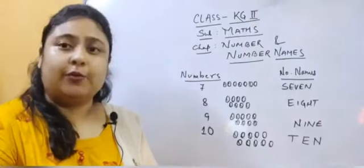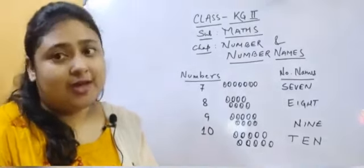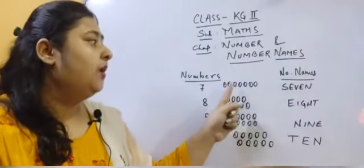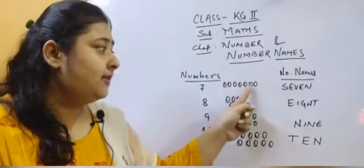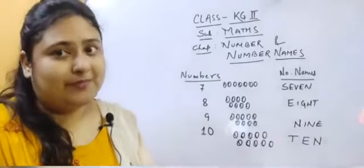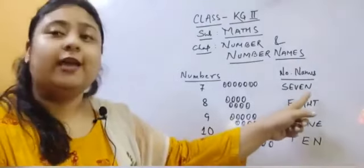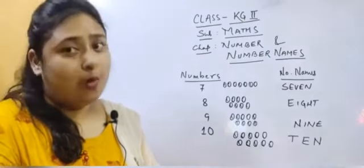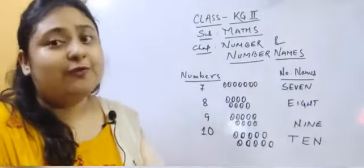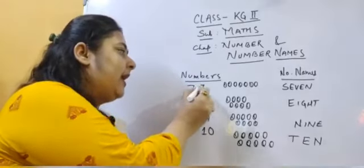Children, let's learn about the next number. After number 6 comes number 7. So let's count: 1, 2, 3, 4, 5, 6, 7. So children, how many balls are there? There are 7 balls. How do we spell it? Let's learn: S-E-V-E-N. Let's say it once more: S-E-V-E-N. How do we write it, children? We write it like this — one horizontal line coming down a straight line. This is number 7.